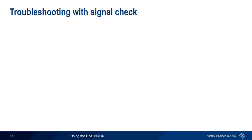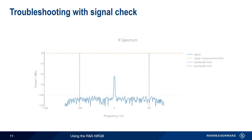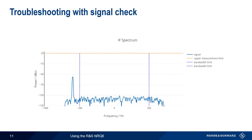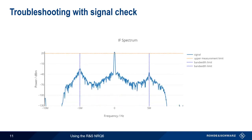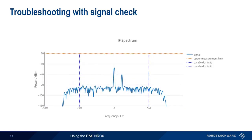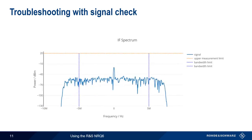Let's look at a few examples. Normally, our signal of interest should be visible between the upper and lower bandwidth limits — here, the blue dashed lines. This signal should also be below the upper measurement limit, shown in orange. Common problems include a signal that falls outside of the measurement frequency limits, a signal that exceeds the upper measurement limit, as well as the presence of spurious signals, or an excessively high noise floor.